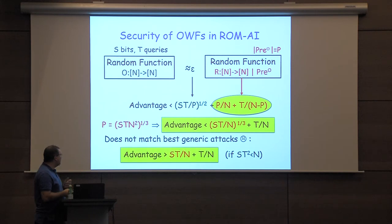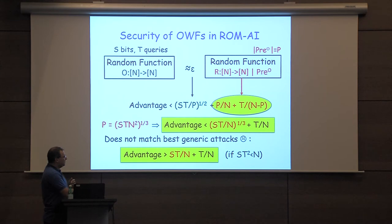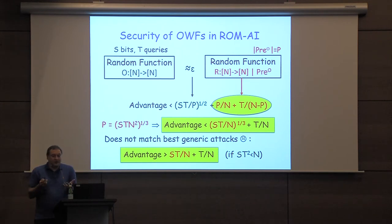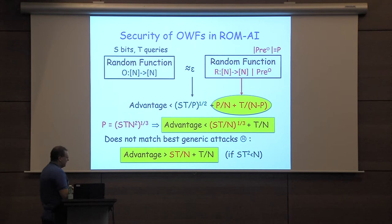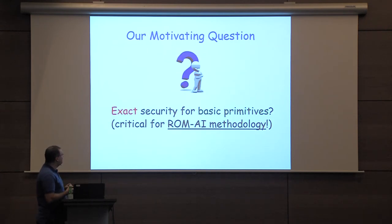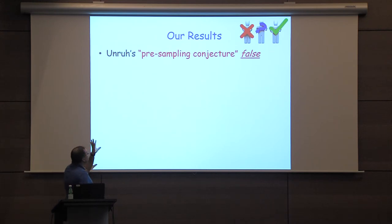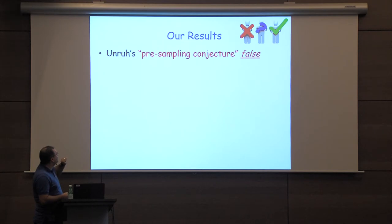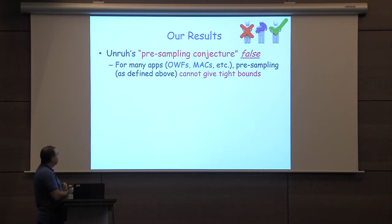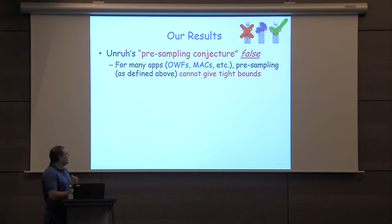This motivates our main question: what is the best exact security for basic primitives, which is critical to instantiating this methodology in practice? So let me state our results. First, we unfortunately disproved a really elegant conjecture of Unruh called the pre-sampling conjecture. The practical implication is that for many applications such as one-way functions, pre-sampling — even if you improve Unruh's bound — cannot give you tight bounds. It's essentially not powerful enough to get what we want. Then we introduced a new technique: compression.